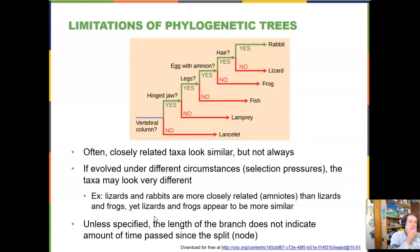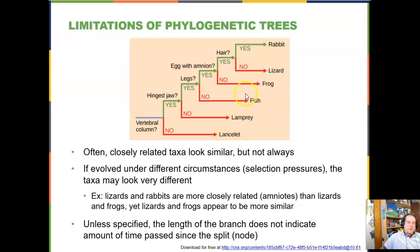Closely related taxa can look very different: rabbits and lizards are most closely related here, yet have undergone very different evolutionary trajectories due to different selection pressures, producing very well-adapted but quite different animals. Meanwhile, the lancet, lamprey, and fish share many superficial similarities even though they represent far more evolutionary time and far more distant divisions than the split between lizards and rabbits.